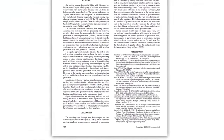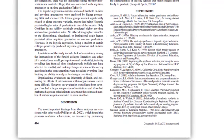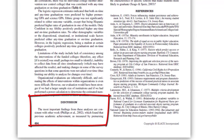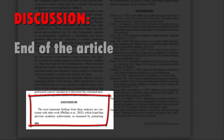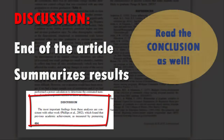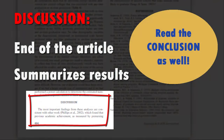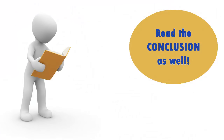Next, jump down to the Discussion section, which is usually found toward the end of the article. The Discussion section summarizes and gives insights on the results. You may also see a section labeled as the Conclusion, and if so, you will want to read that as well.